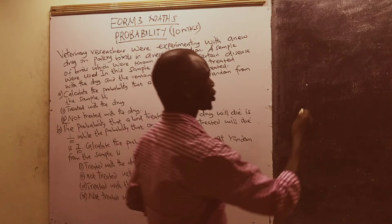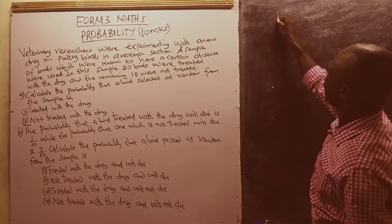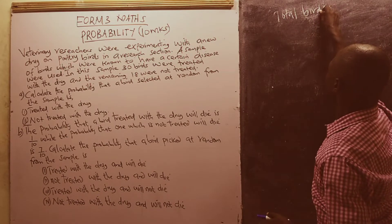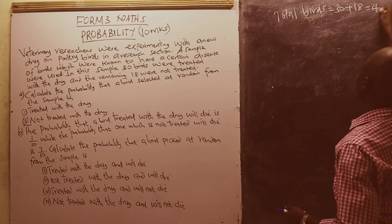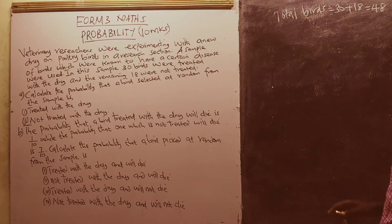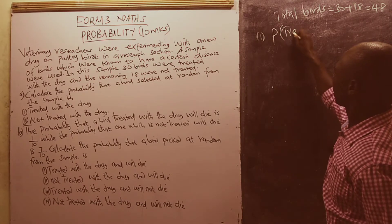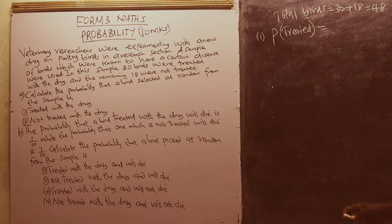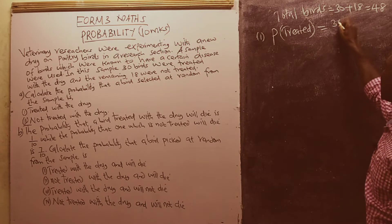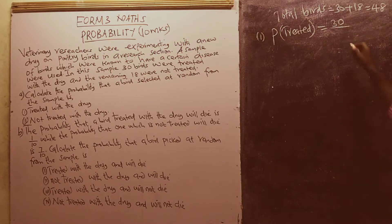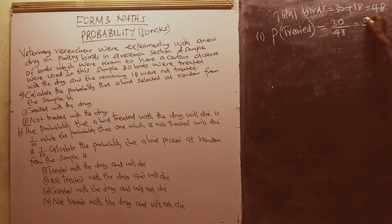In this case, we have a total of 48 birds — 30 plus 18 gives us 48. We are supposed to calculate the probability that the bird was treated with the drug. For Roman numeral 1, the probability that a bird was treated equals the number of treated birds, which is 30, divided by the total number of birds, which is 48. Simplifying using the common factor 6, we get 5 over 8.